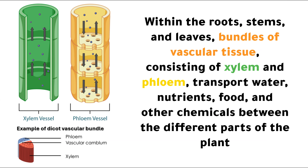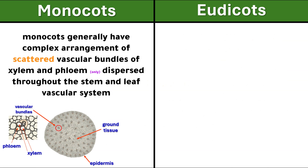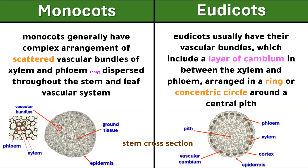Within the roots, stems, and leaves, bundles of vascular tissue consisting of xylem and phloem transport water, nutrients, food, and other chemicals between the different parts of the plant. Monocots generally have a complex arrangement of scattered vascular bundles dispersed throughout the stem. Eudicots usually have their vascular bundles — which include a layer of cambium between the xylem and phloem — arranged in a ring or concentric circle around a central pith.